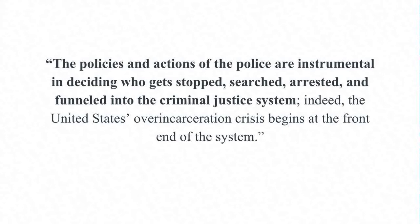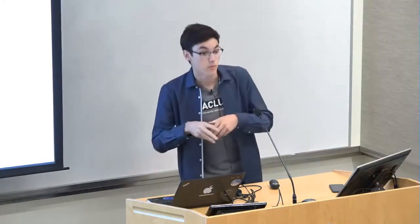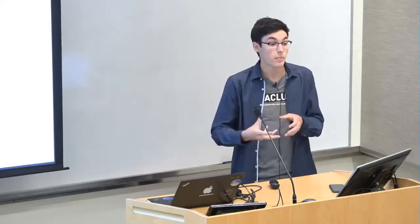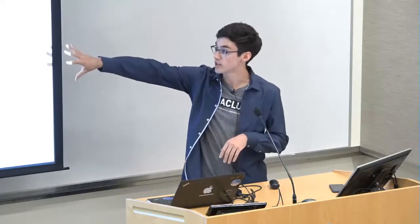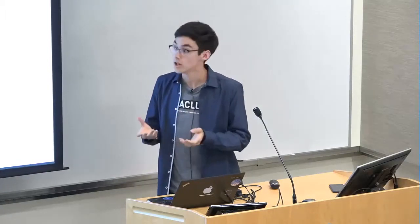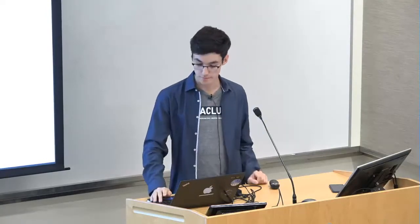One area within criminal justice reform that the ACLU is very ardent about is the front end of the system — how the police engage with the public. They see it as the funnel into the criminal justice system where over-incarceration begins. There's a real focus at the ACLU about the police, what they're doing, how they're engaging with certain populations, largely marginalized groups. One big thing they're fighting against is broken windows theory and broken windows policing.